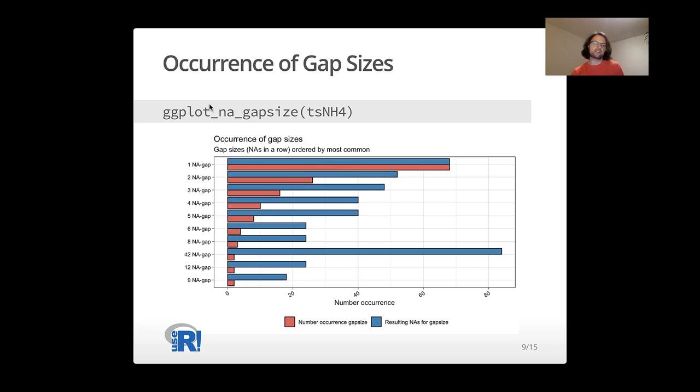And if you have certain patterns which seem quite unlikely, for example, if your whole dataset has always six NAs in a row and no other gap lengths, then there might be something strange going on. And you might want to investigate further. These plots with additional information about the patterns can be quite useful. And there are also other plots than this gapsize function to do this.